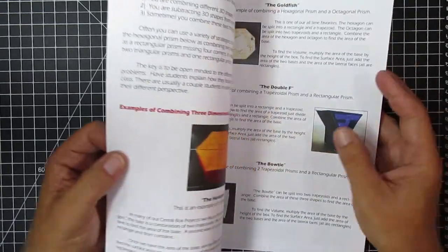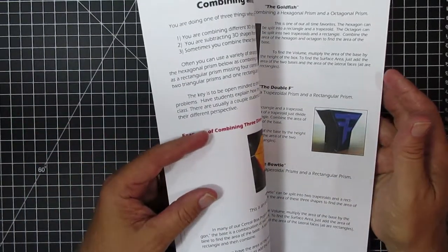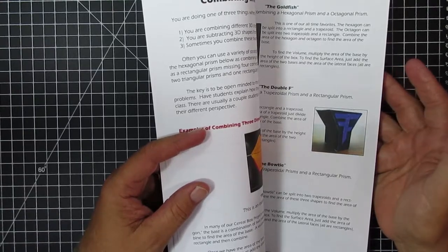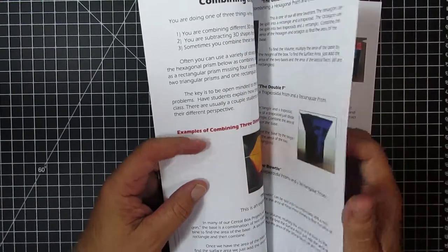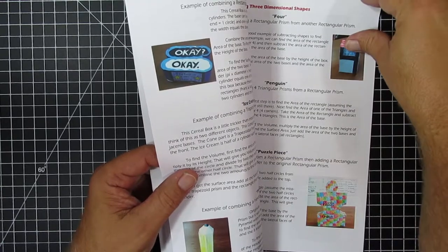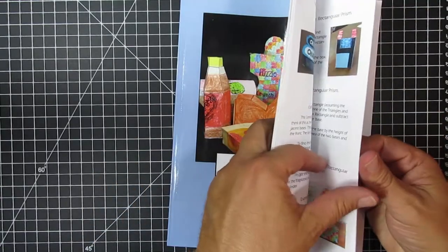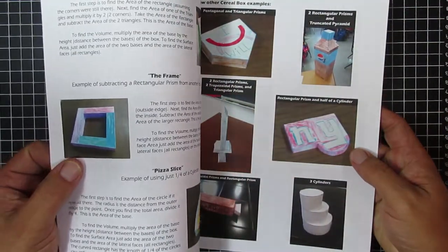We get into later, we've talked about combining and subtracting, which is our strategy for putting the object together. And we have some different examples along with some projects. We also have a whole bunch of pictures of different projects that we've done.